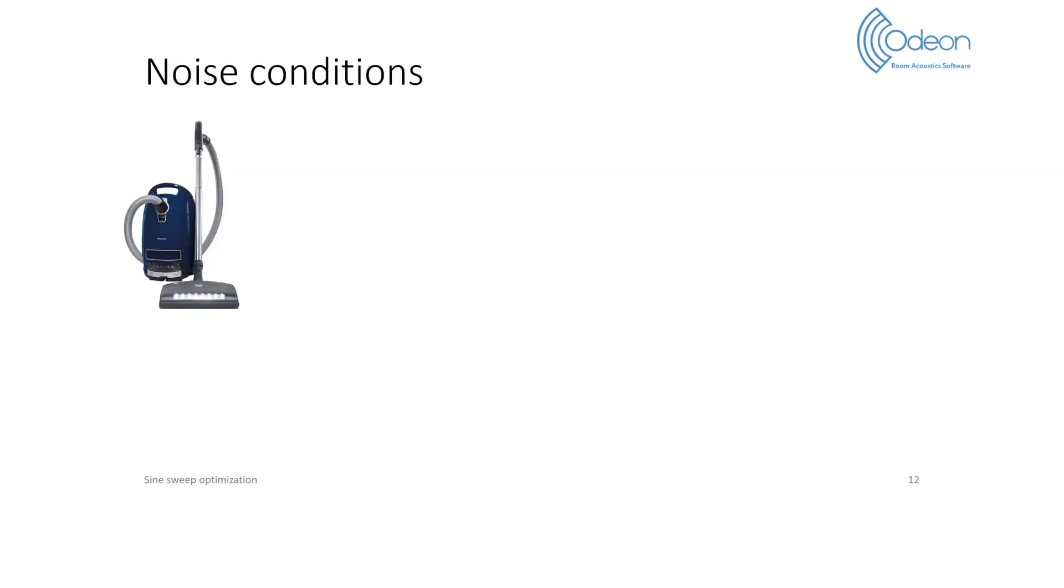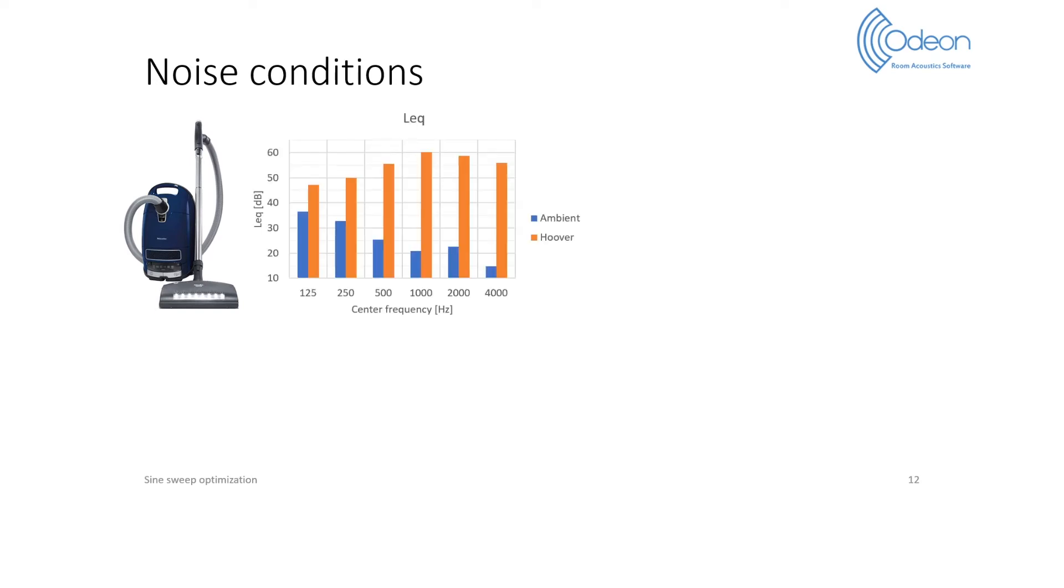We cover several cases in the paper, but I will focus on one example, in which a hoover was operating in the room. This first graph shows the background noise level, LEQ in orange, measured with a sound level meter at the receiver position. For comparison, we also show the ambient conditions in blue, where the hoover is turned off.